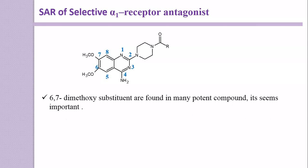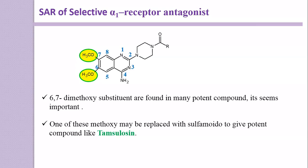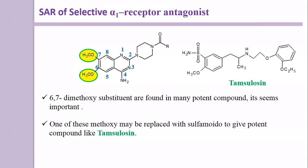The next point is: the 6,7-dimethoxy substituents are found in many potent compounds and seem to be very important. But if you replace one of these methoxy groups with a sulfonamido group, it gives a potent compound like Tamsulosin. Here is the structure of Tamsulosin, in which one of the methoxy groups is replaced by a sulfonamido group. It is also worth noting that Tamsulosin lacks the quinazoline ring — a point already discussed earlier.